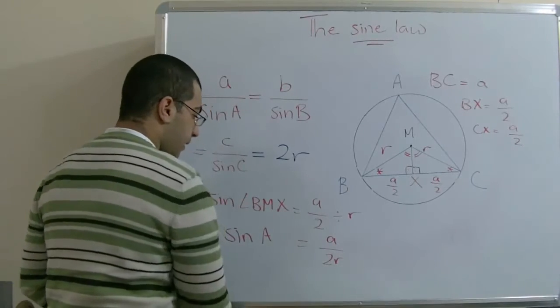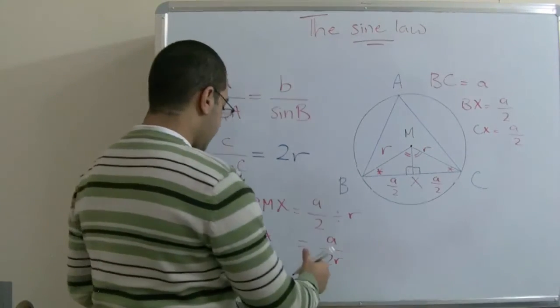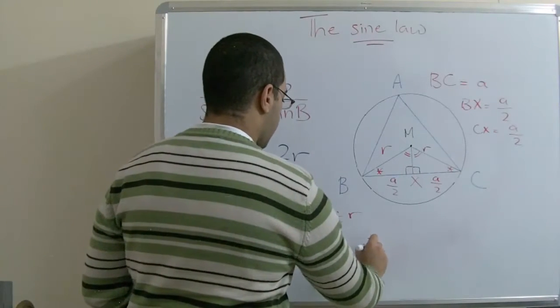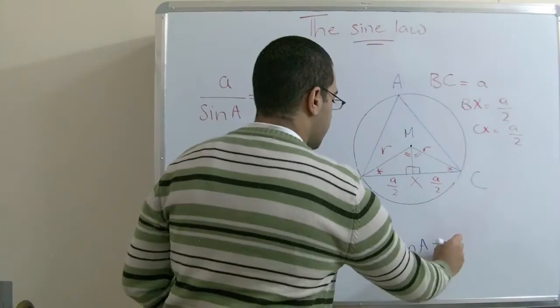Sine A equals a over 2R. By multiplying both sides by 2R, we get 2R sine A equals a.